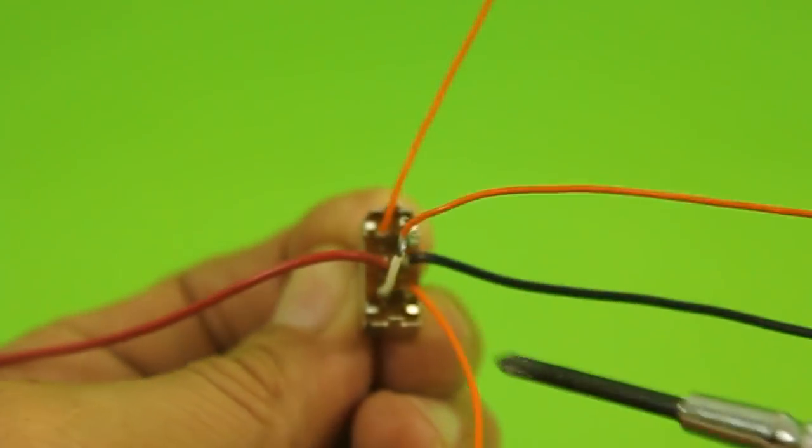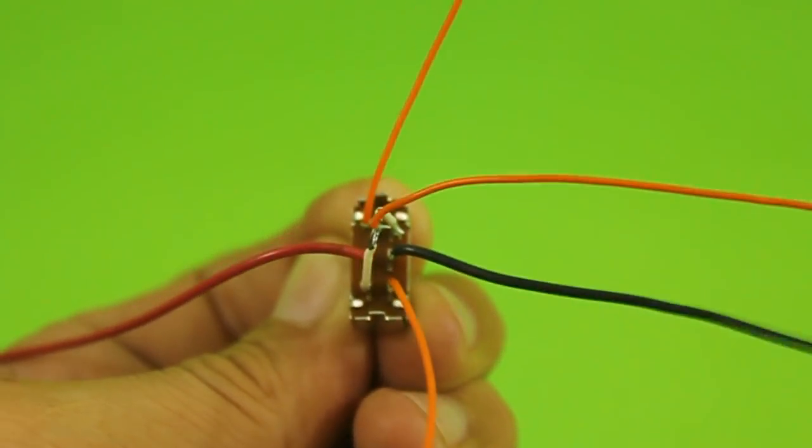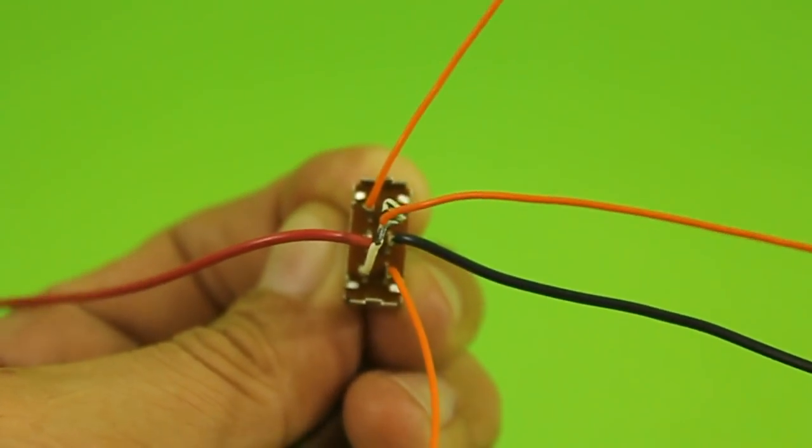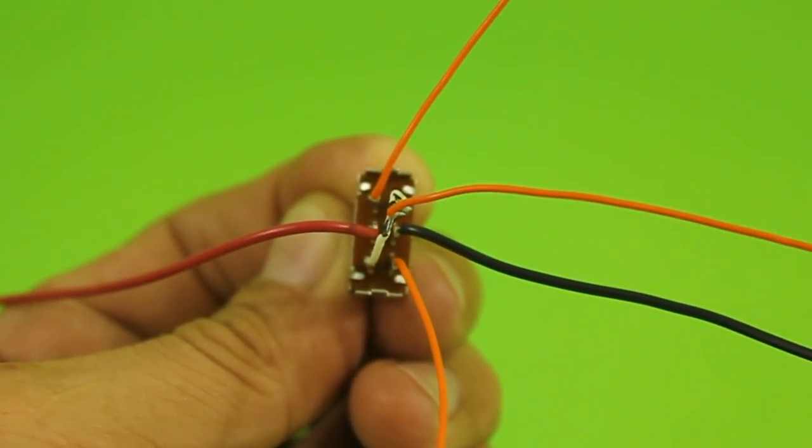And finally, the remaining two terminals. From there, we get two wires that will go to the ends of the capacitors.